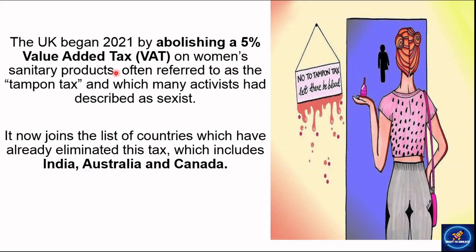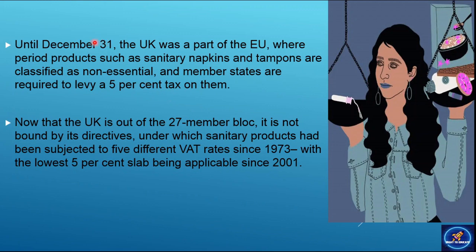Basically, countries like India, Australia, and Canada are such countries which have sanitary products with an added tax. This is an indirect tax. Sanitary products are an essential commodity, and removing this tax is very important.